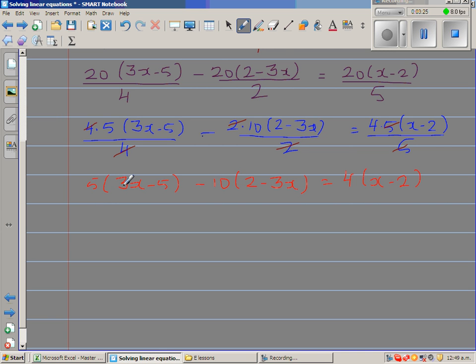Let's expand this. 5 times 3x is 15x, 5 times negative 5 is minus 25. Now be super careful multiplying by negative 10. Negative 10 times 2 is negative 20. And this is where most can go wrong: negative 10 times negative 3x is plus 30x. This equals 4x minus 8.